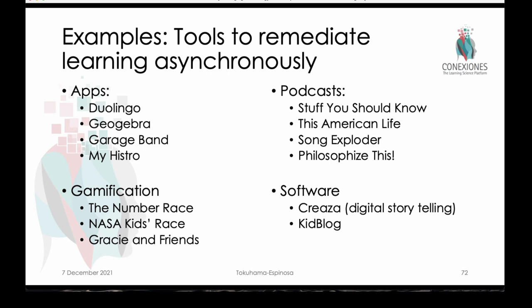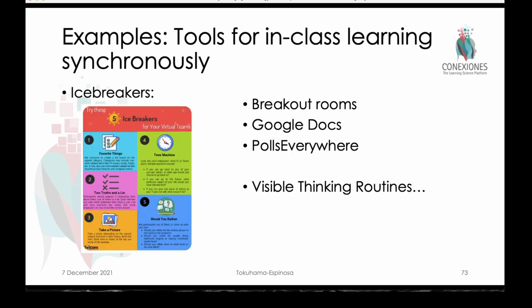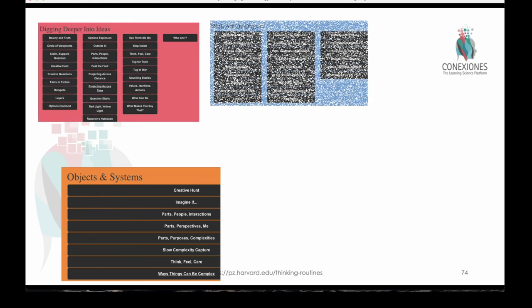Some examples of high-quality tools that have been vetted carefully and have a lot of research behind them: Duolingo, GeoGebra, GarageBand, MyHistro, and more. For gamification, The Number Race has a lot going for it, and NASA Kids Club is fantastic — these are aimed at younger learners, but if you're interested, we can sit together and talk about how to devise bundles for university-level learners in your specific topic area. There are also great tools if you're using Zoom or doing collaborative learning synchronously. Even in a real live classroom, you can have students do collaborative activities in Google Docs or other formats to document their learning and share with a larger group. Multiple thinking routines have been used successfully from kids as young as five up through adults.